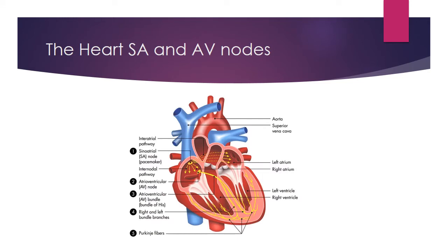Here we are going to talk about how the heart actually contracts. We have an SA node — the sinoatrial node — near the right atrium. This is often called the pacemaker of the heart because it is responsible for causing the heart to beat. The sinoatrial node sends out two electrical signals. One of those signals stimulates the atria on both the left and right side, causing both atria to contract and pushing blood down into the left and right ventricle.